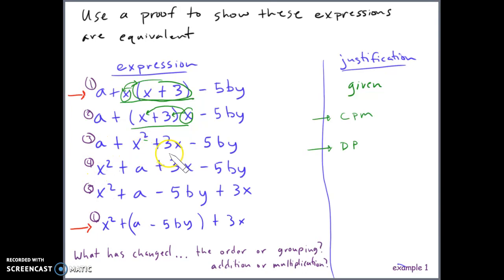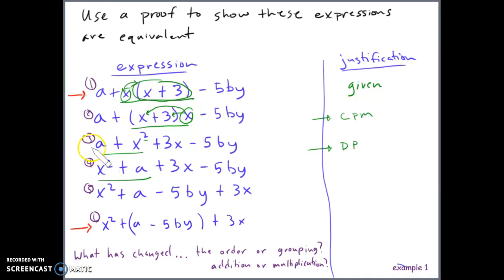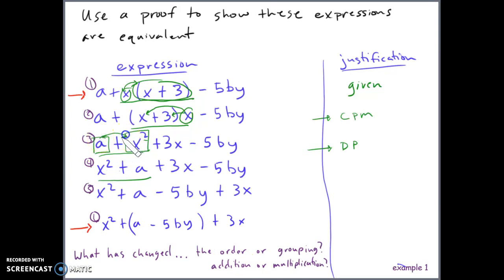From expression 3 to 4, we go from a plus x² plus 3x minus 5b to x² plus a plus 3x minus 5b. The terms a and x² have changed order. Since there's an addition sign between them, they changed the order of things being added. This is the commutative property of addition.